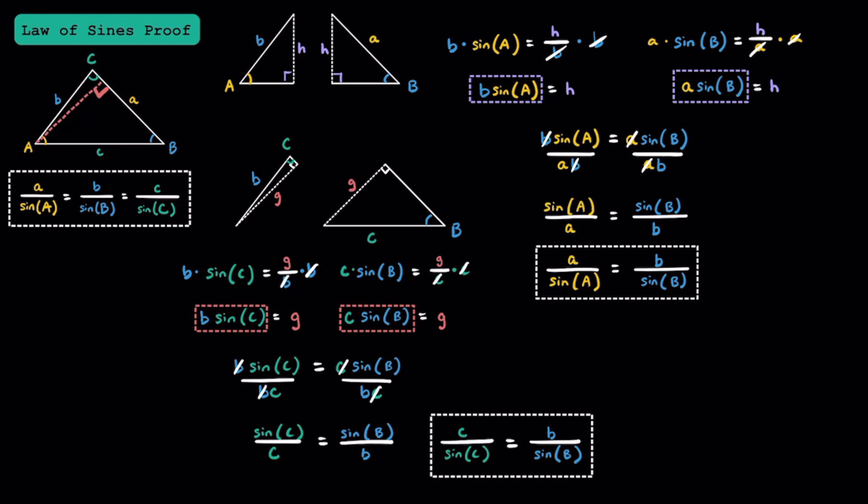Just like earlier, we can flip this upside down so our sides are on top and our trig functions are on the bottom. If we know that a over sine A equals b over sine B, and c over sine C equals b over sine B, then we can combine these and say that a over sine A equals b over sine B equals c over sine C. So if you were wondering where the law of sines comes from — there's the proof.